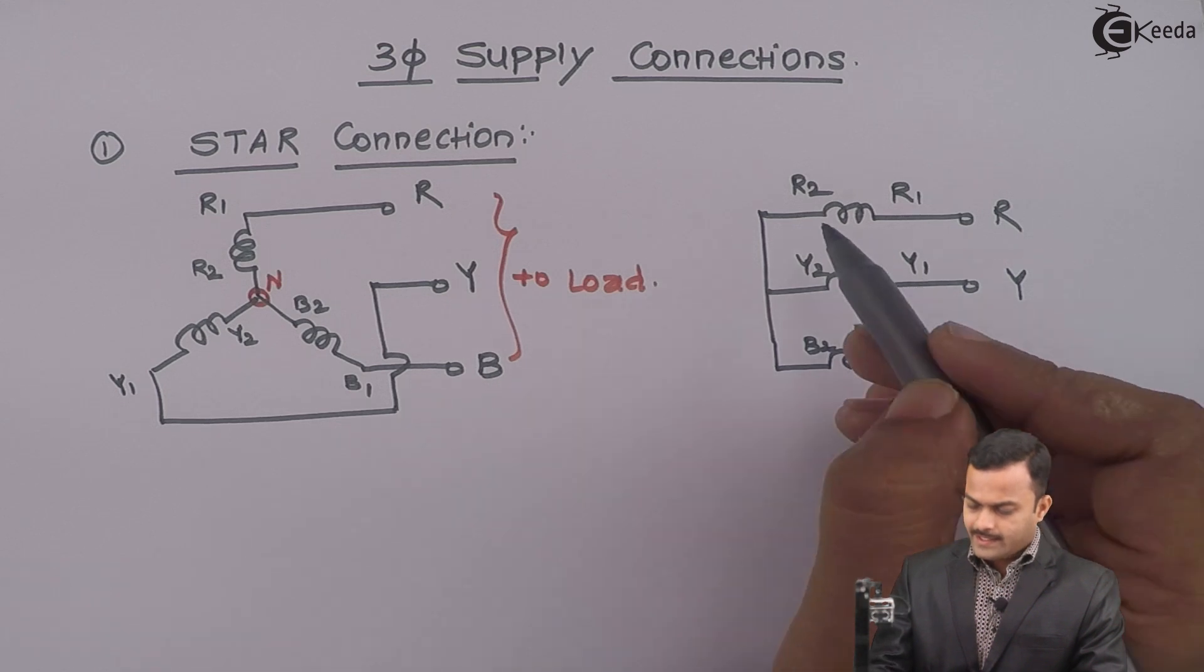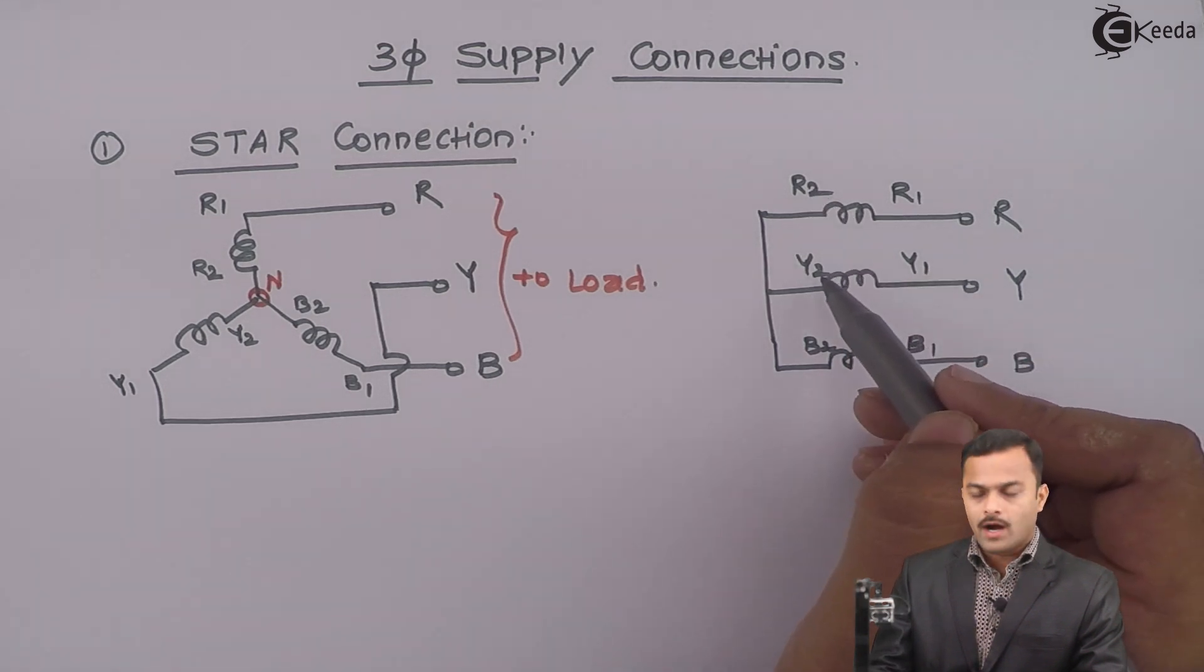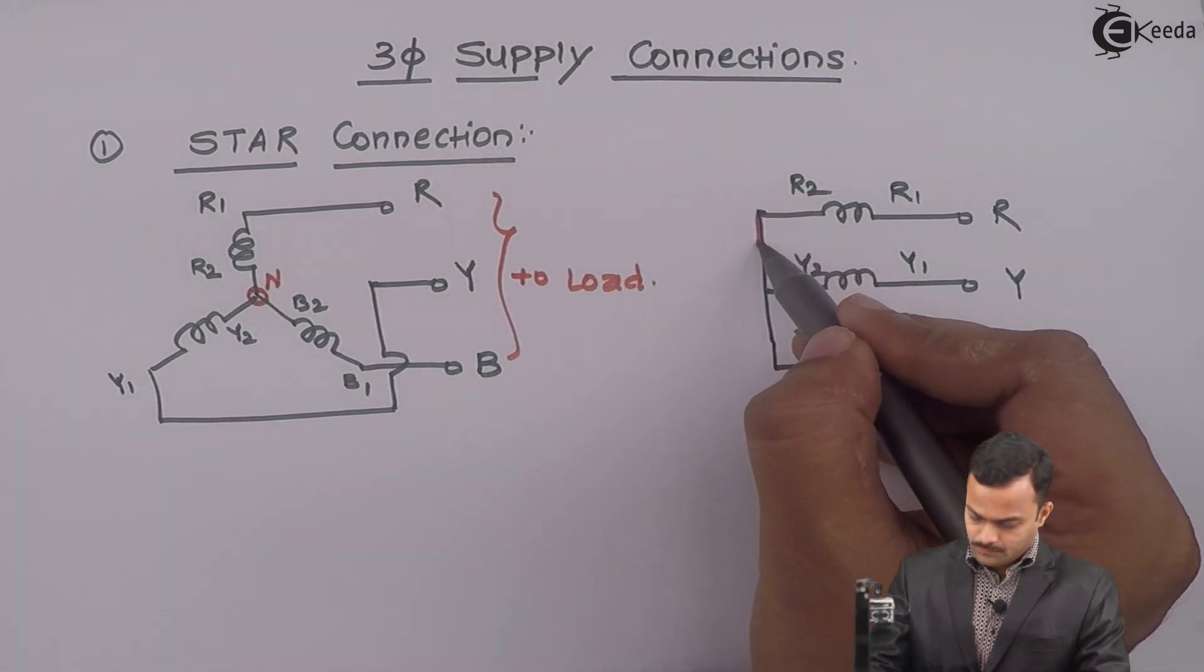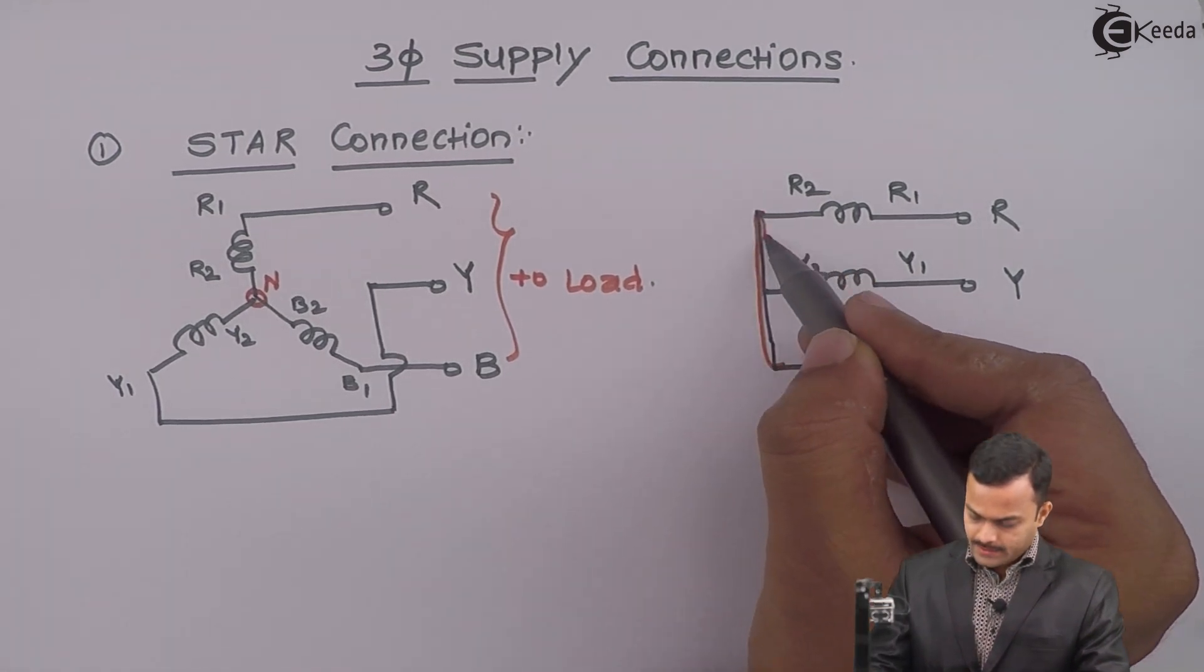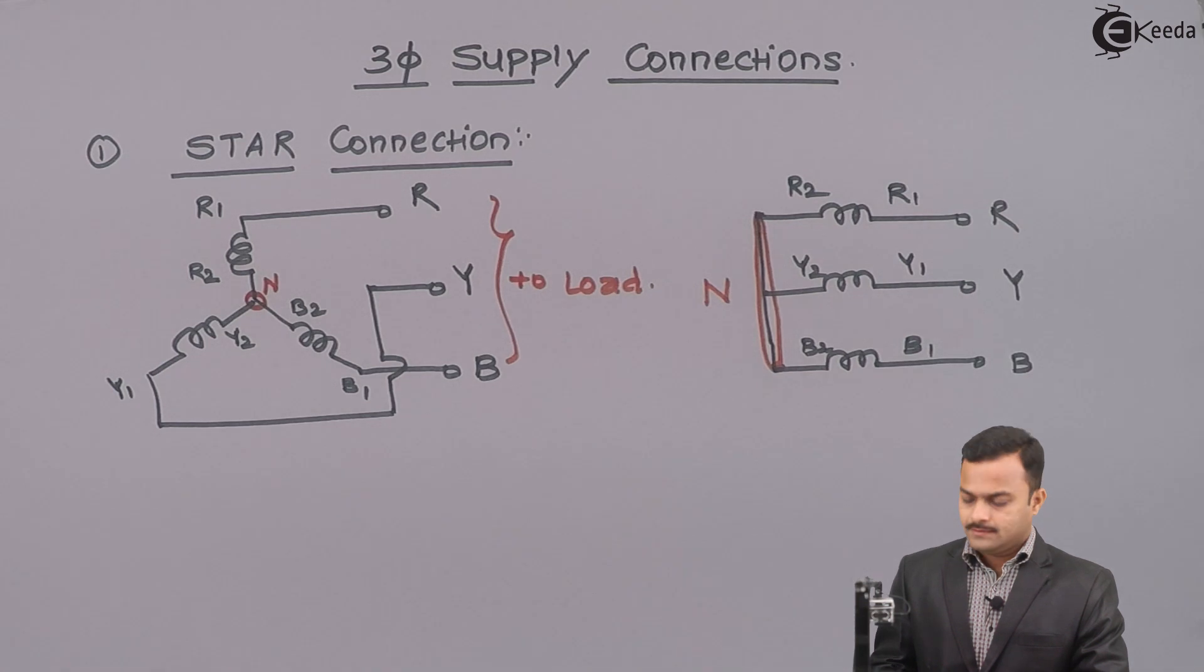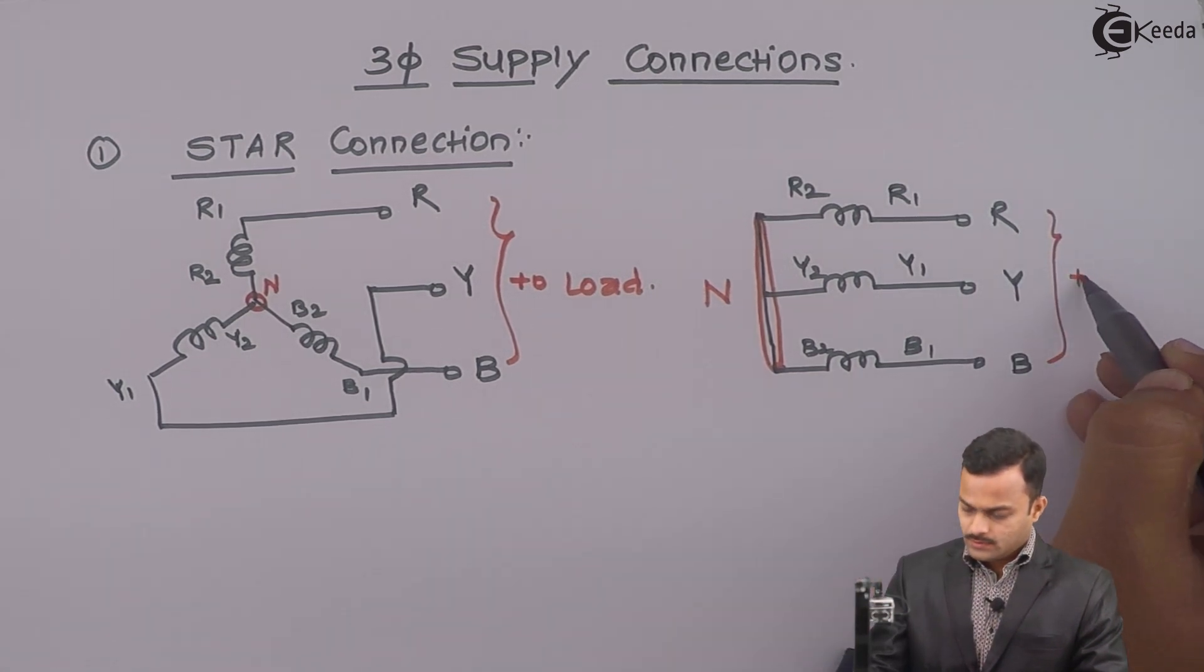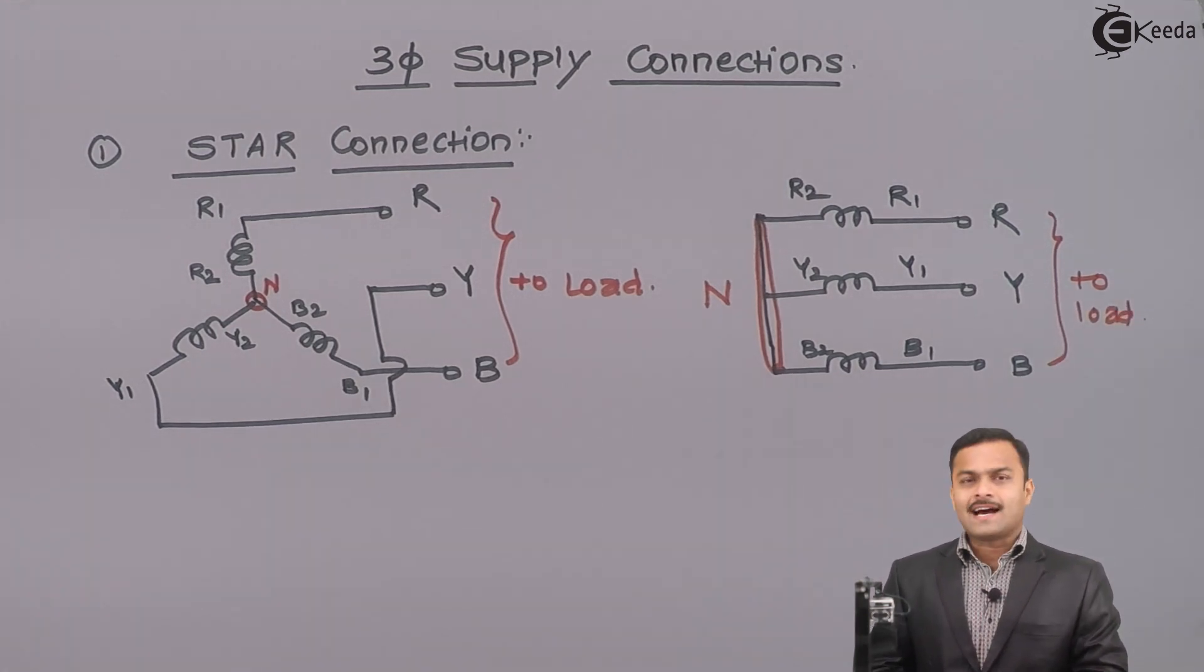So, one end, that is R2, Y2, B2 connected together to form a neutral point. So, N and open ends are for connection to load. So, this is star connection.